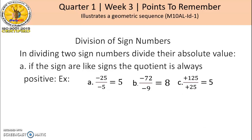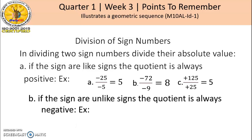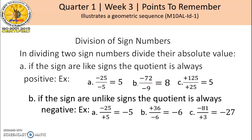And for letter C, positive 125 divided by positive 25, the quotient is positive 5. If the signs are unlike signs, the quotient is always negative. Examples: Letter A, negative 25 divided by positive 5, the quotient is negative 5. Letter B, positive 36 divided by negative 6, the quotient is negative 6. And letter C, negative 81 divided by positive 3, the quotient is negative 27.